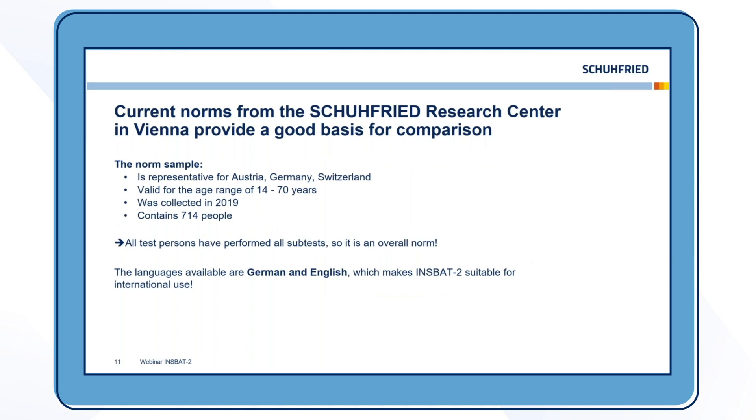Current norms from the Schuhfried Research Center in Vienna provide a good basis for comparison. We have a very big norm sample that contains 714 people. It is representative for Austria, Germany and Switzerland for the age range of 14 to 70 years and was collected in 2019. All the test persons have performed all subtests, so it's an overall norm. It's not patched together from individual samples. The languages that are available are German and English, which makes the INSBAT suitable for international use.